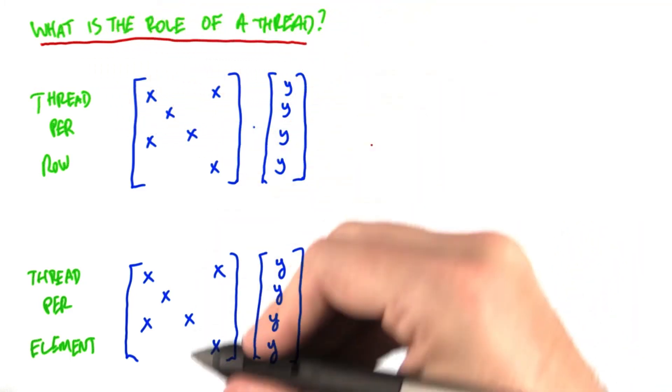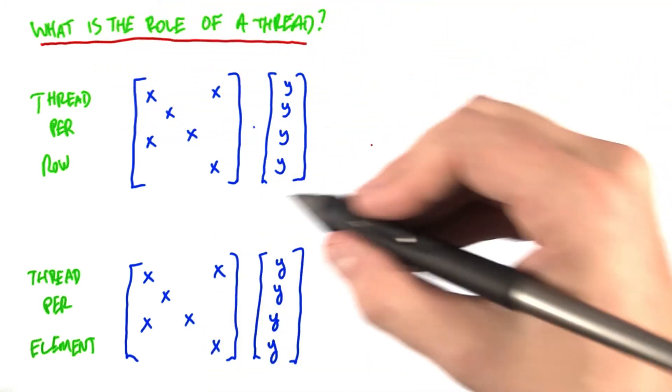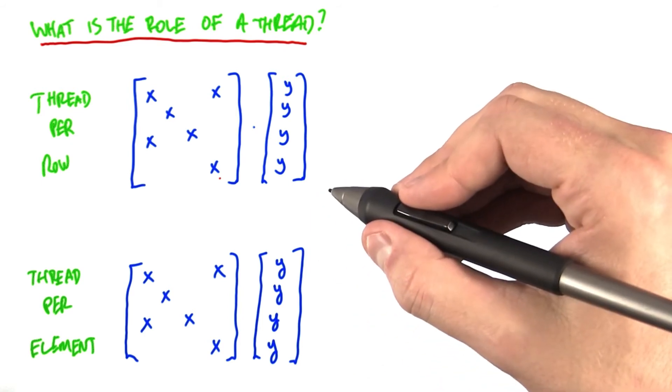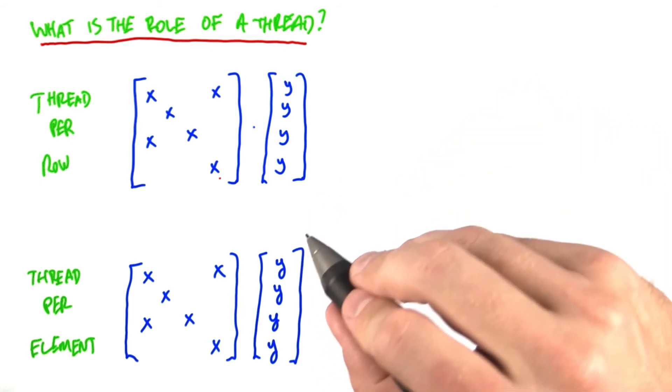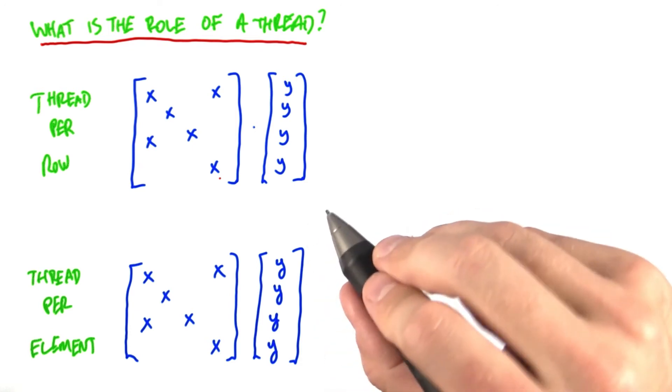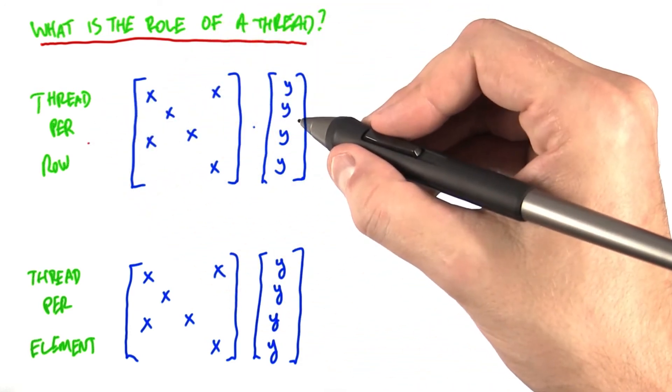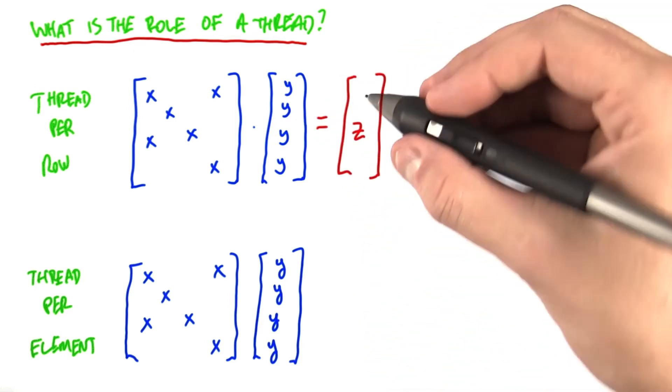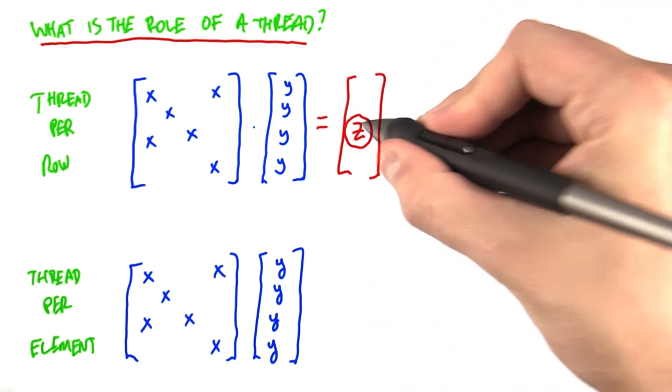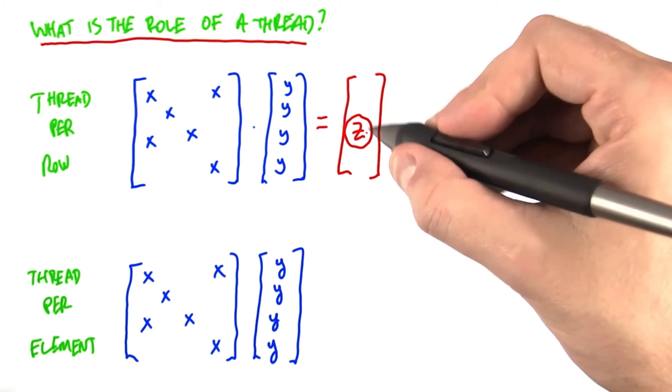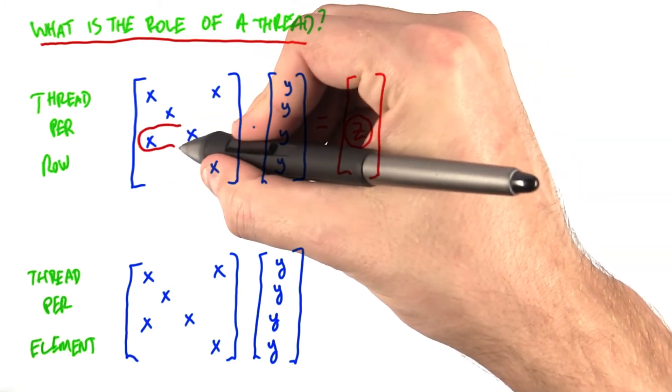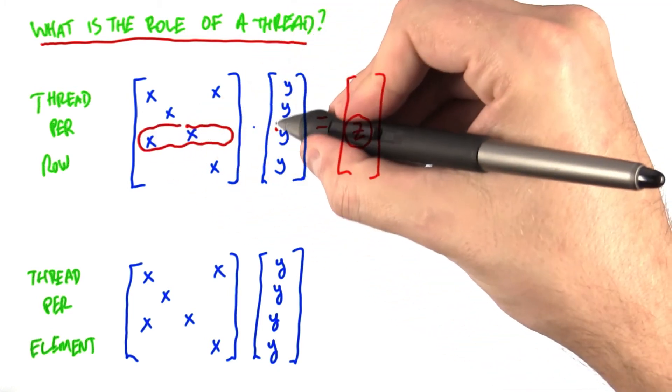Let's look at this sparse matrix to answer this question. Here we're using x's to represent non-zeros and blanks to represent zeros. We will consider two alternatives. The first is that we will assign one thread per row of the sparse matrix. Here, a thread is responsible for computing one entry in the output vector. And we do this by taking the dot product of this row with this column.